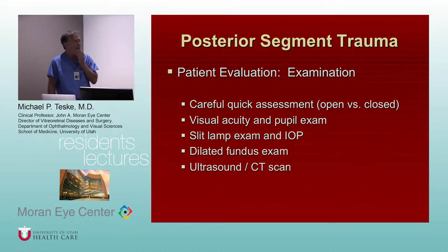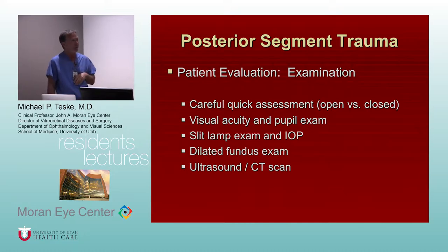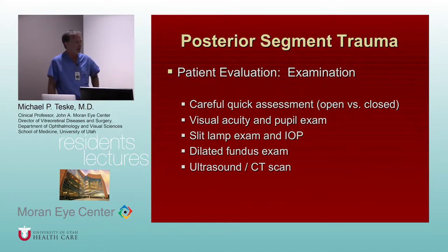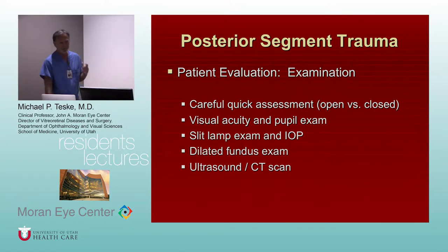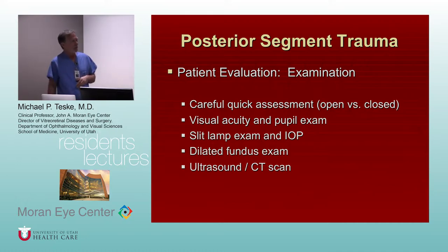In evaluating the patient, it depends on their status and where you can examine them, but at least a quick initial assessment — do we have an open or closed globe? You always want to try to document at least some level of vision. Can they see light or near-card vision? If you can get them into the regular exam lane for a more thorough exam, that's obviously preferred, but it depends on the rest of the injuries. Basic exam includes slit lamp, pressure, dilated fundus, and imaging depending on the nature of the injury and whether you suspect a foreign body.